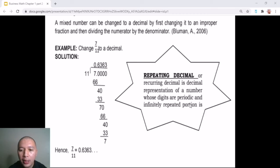A repeating decimal or a recurring decimal is a representation of a number whose digits are periodic and infinitely repeated. Thus, you will be required to round off your answer dependent to the number of decimal points that is required for your given.